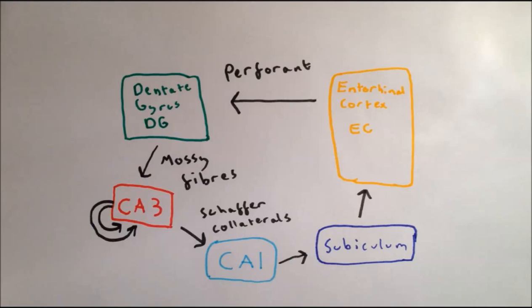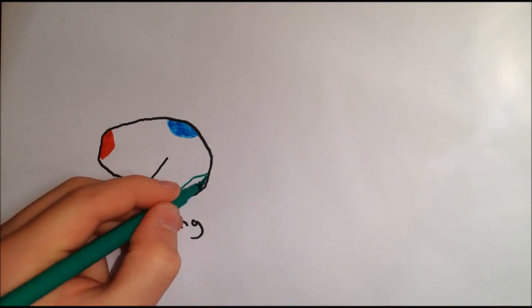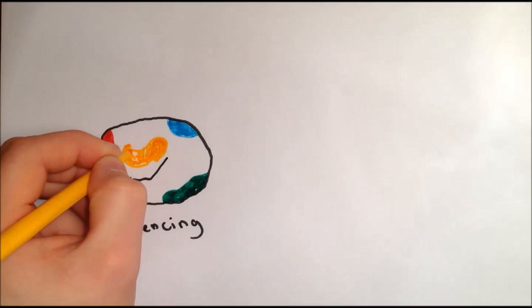One of the most popular theories concerning the role of the hippocampus in episodic memory is hippocampal indexing theory. This theory states that when we have a conscious experience, many different areas of the neocortex are activated, corresponding to the different aspects of that experience.